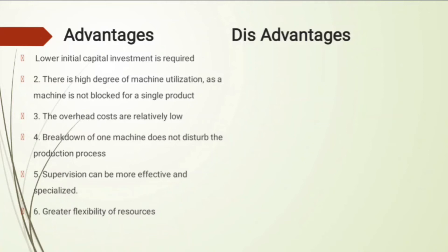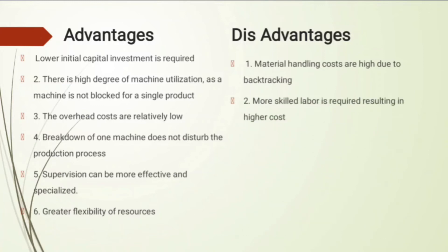Supervision can be more effective and specialized — you can hire a casting master for the casting department, a stitching master for the stitching section, and a cutting master for cutting. There is greater flexibility of resources since each section performs its work separately. Disadvantages include high material handling costs due to backtracking, the need for highly skilled labor resulting in higher cost, and higher work-in-progress inventory requiring greater storage space.